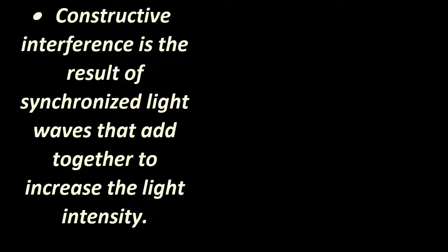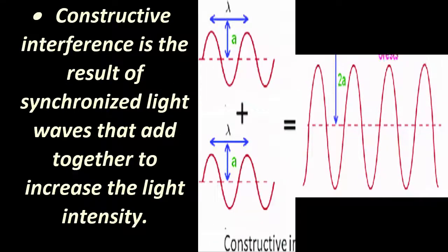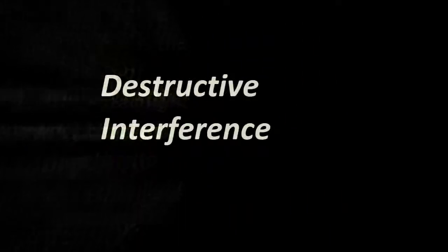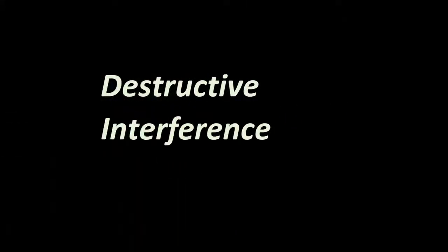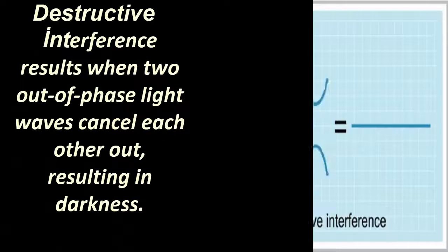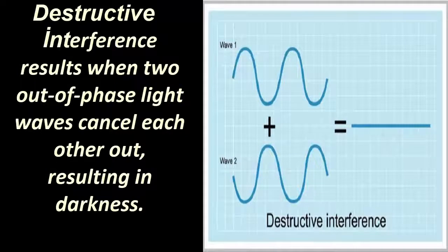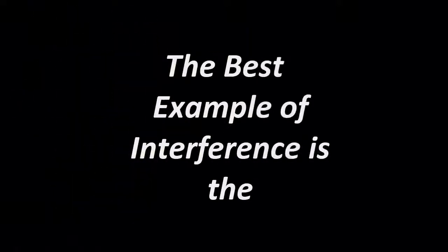Constructive interference is the result of synchronized light waves that add together to increase the light intensity. Destructive interference results when two out-of-phase light waves cancel each other out, resulting in darkness.